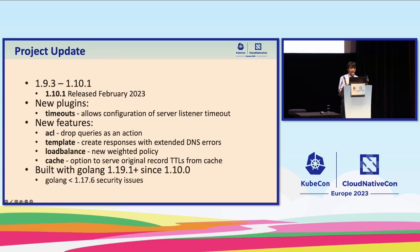I'm going to discuss the project update since the last KubeCon. Several versions of CoreDNS have been released. The latest release was 1.10.1, released in February 2023 — a couple months ago. In this latest release, we introduced a new timeout plugin, several new features like ACL allowing you to drop a query as an action, the template plugin allowing you to create requests with extended DNS errors, the load balancer plugin adding a new weighted policy, and the cache plugin giving you the option to serve original record TTLs from cache.